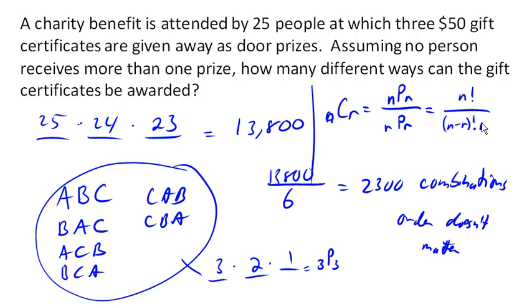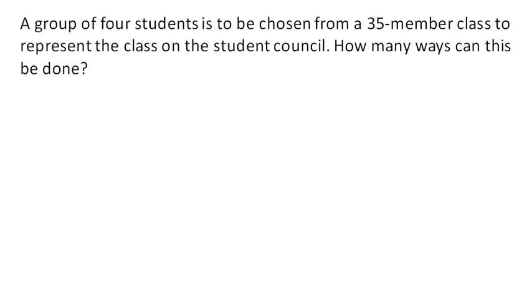Now let's look at an example. A group of four students is to be chosen from a 35-member class to represent the class on the student council. Now, order doesn't matter here because they're all just representatives.